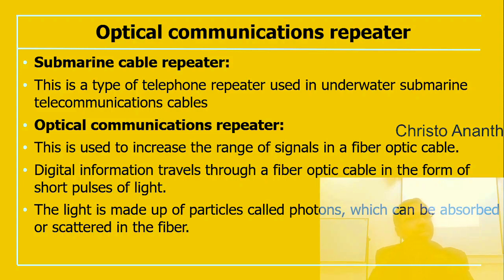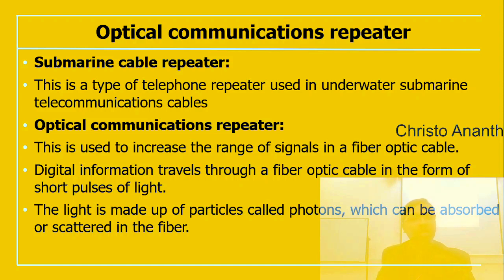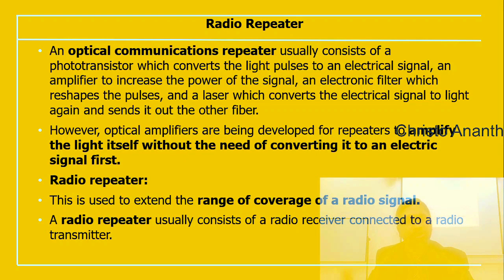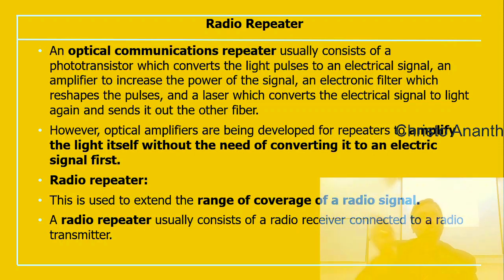Submarine cable repeaters are used in underwater submarine telecommunication cables. Optical communication repeaters increase the range of signals in fiber optic cables — digital information travels through fiber optic cable as short pulses of light (photons), which can be absorbed or scattered in the fiber. An optical communication repeater contains a phototransistor that converts light pulses into electrical signals, an amplifier to increase power, an electronic filter to reshape the pulses, and a laser to convert the electrical signal back to light and send it onward. Optical amplifiers can also be used as repeaters to amplify the light signal without converting it to an electrical signal.